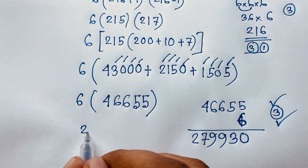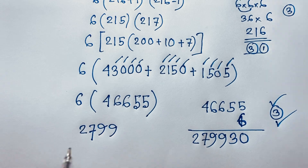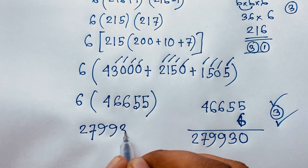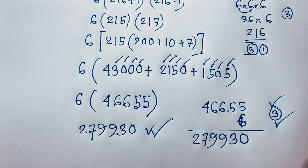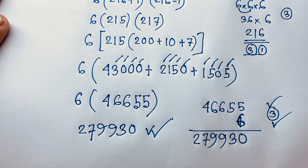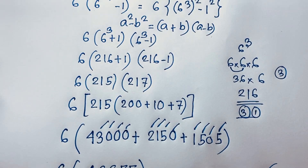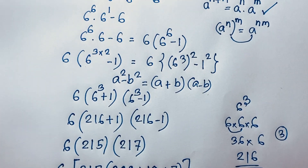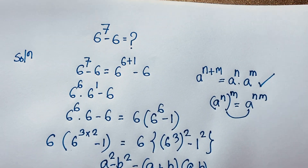So 279,930 is our final answer. In this math problem we solved 6 to the power 7 minus 6 without a calculator. Thank you all — if you enjoyed this video, please subscribe to the channel for other interesting videos. Goodbye, take care.